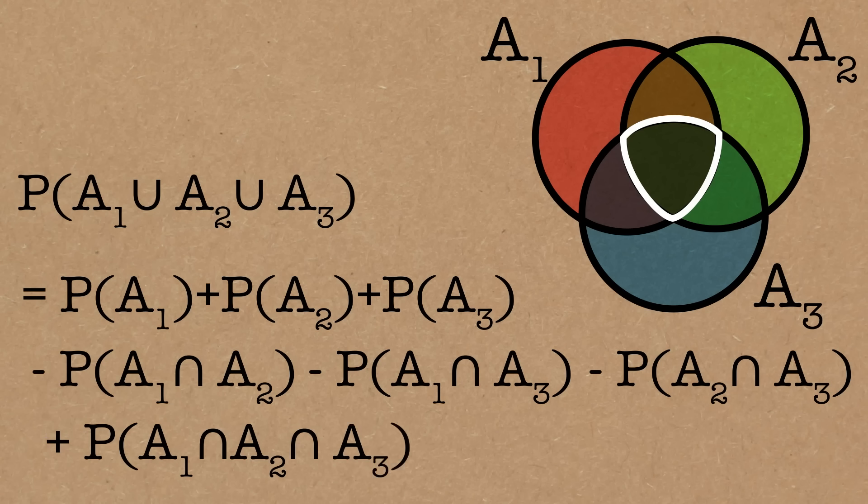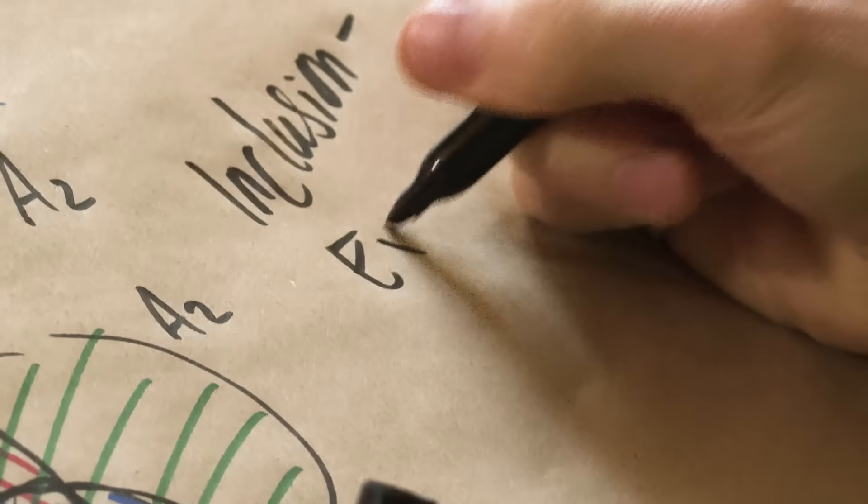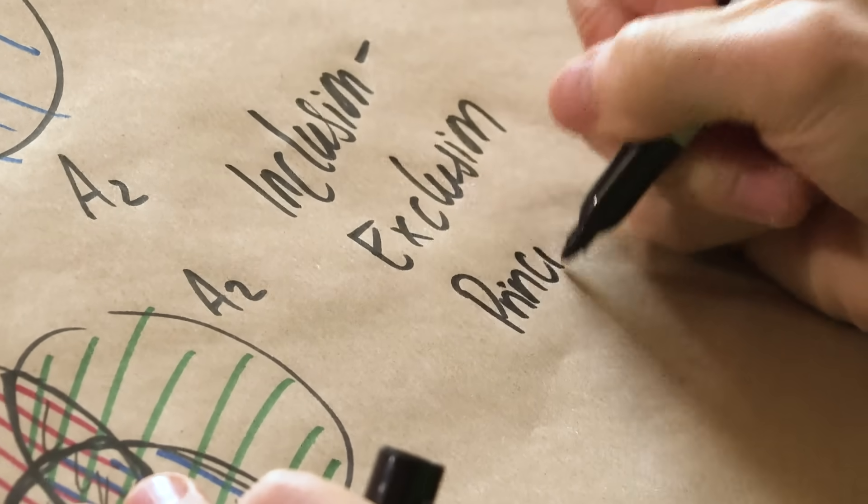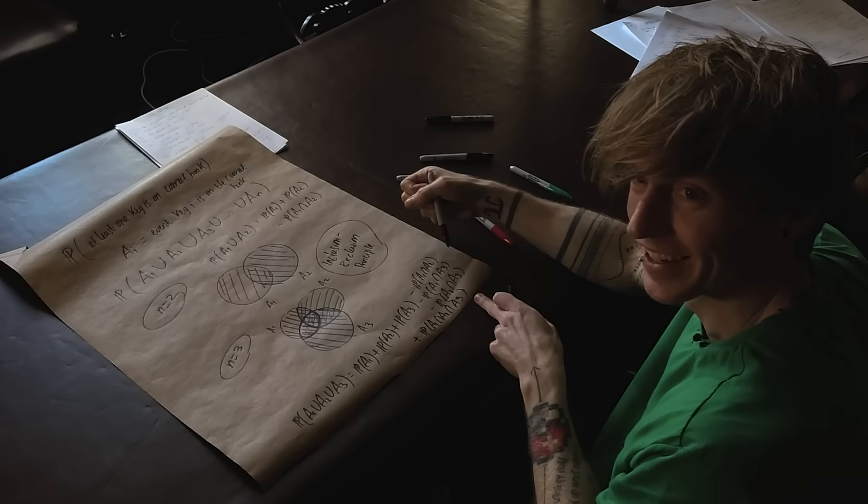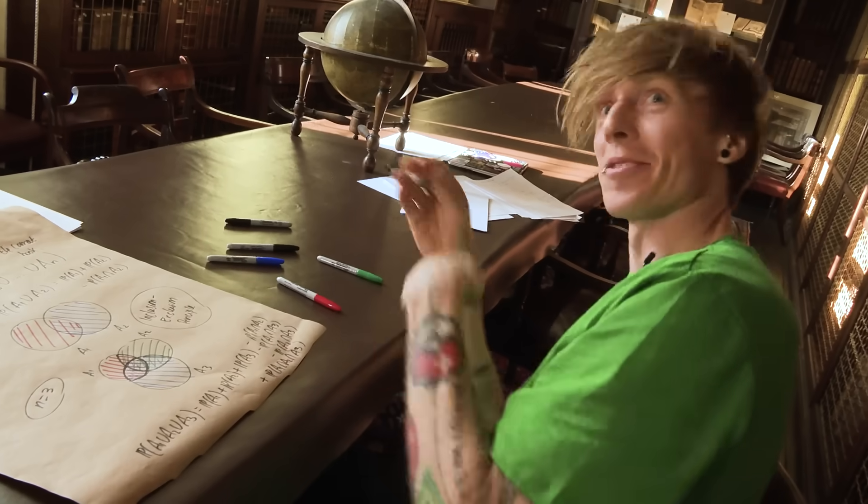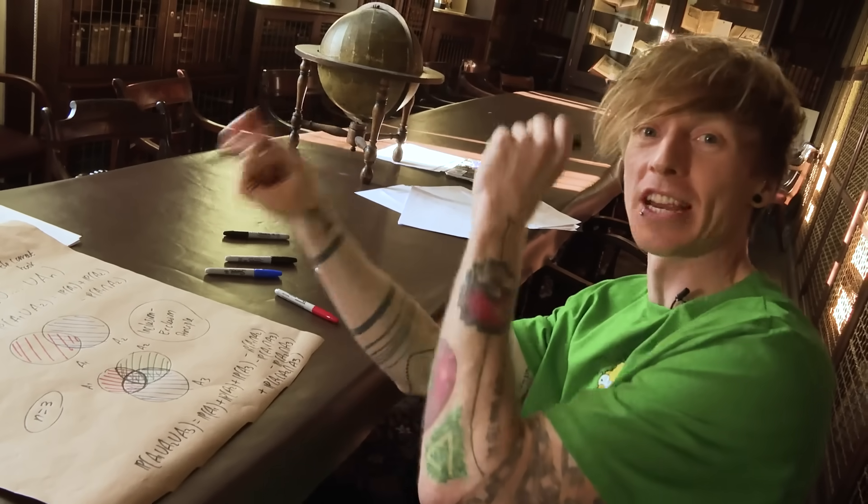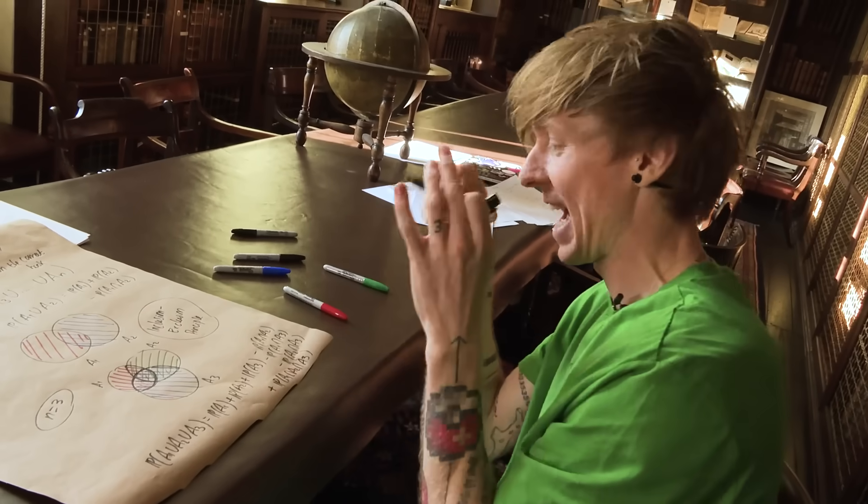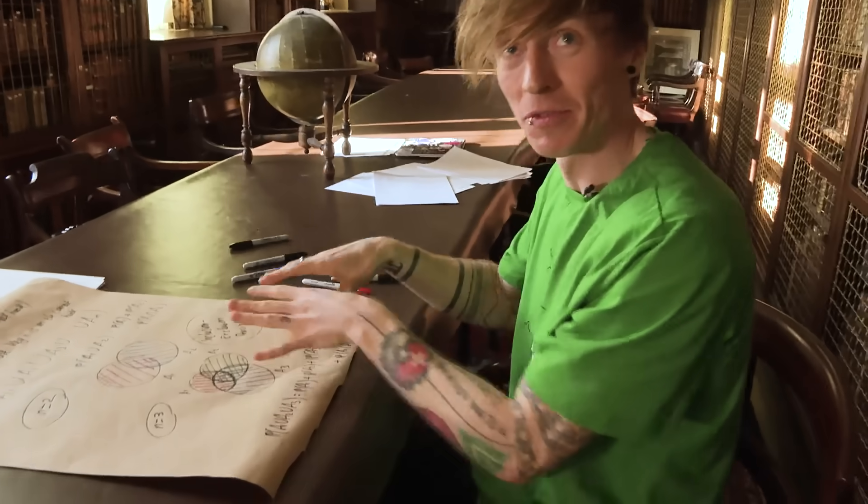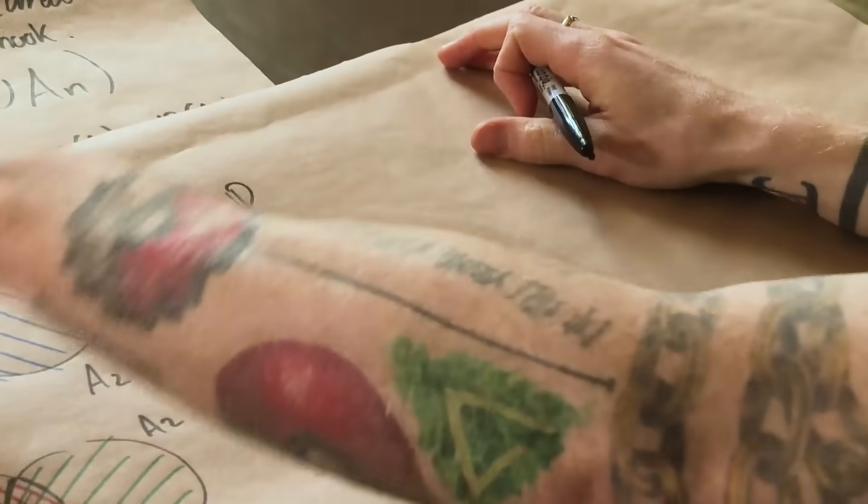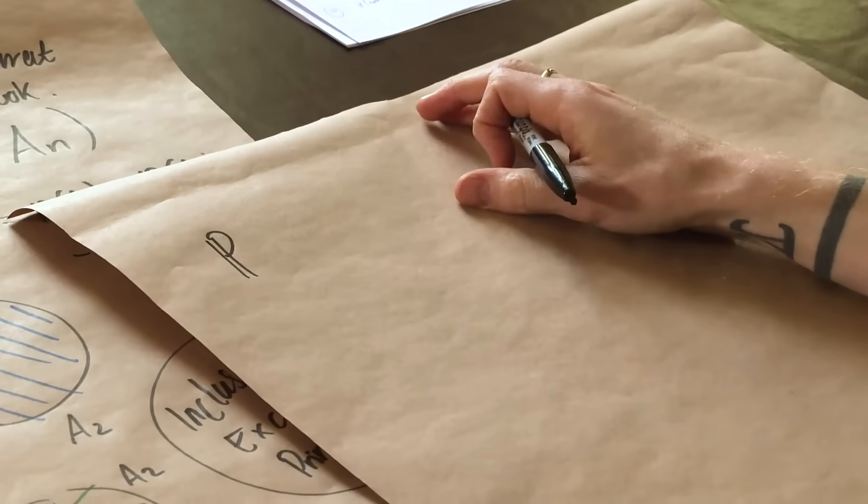What we've got here is the n equals 2 and n equals 3 version of something called the inclusion-exclusion principle, which is an excellent name, because it basically tells you what to do. The idea is you add up all of the single events, then you take away the double events, and then you add back in the triple events, then you take away the four events, and you just keep going, changing the sign. You include it, and then you exclude it. It all works beautifully, because of the properties of Venn diagrams.